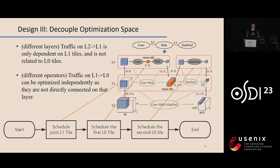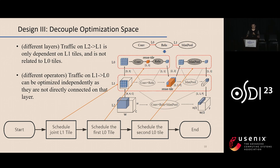To find the tile size that minimizes traffic at each layer, our insight is that it is reasonable to optimize the tile shape for each operator and each layer sequentially. For example, traffic from L2 to L1 is only dependent on the L1 tile and is not related to the L0 tiles. Similarly, traffic from L1 to L0 can be divided into two parts, each independently optimized by the corresponding L0 tile shape. With this independence feature, we can partition the large optimization space into smaller ones and solve them sequentially.